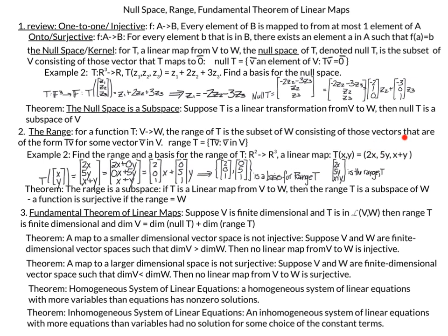Writing this in column vector format, T of (x, y) equals (2x, 5y, x+y). This is exactly what the range looks like. To find our basis I separate this vector into a linear combination of x and y, giving basis vectors (2, 0, 1) and (0, 5, 1) for the range of T.